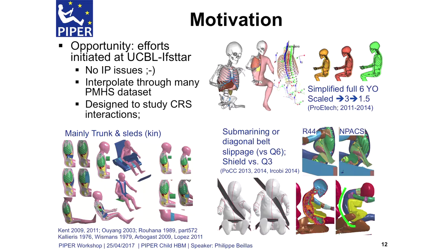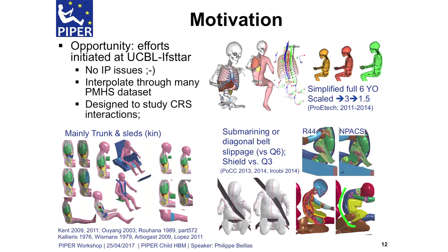We continued to work on that — we just had a trunk model at first, which isn't much. In another project, a French project led by Dorel, we continued and worked on simplified full body models, putting the rest together with a relatively simplified model. That model could already interpolate quite well through the known child biomechanical response. Because we always say there is no data, but there is actually a lot — it's very sparse, only a few specimens each time, but there is a lot of PMHS data with children, scaled corridors, all kinds of data available.